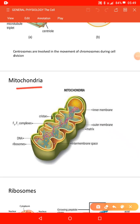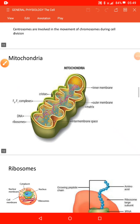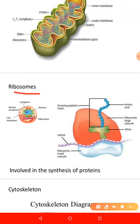The next organelle is the ribosomes — not lysosomes. Ribosomes are organelles without a limiting membrane. They are granular and small dot-like structures. There are two types of ribosomes: those attached to the rough endoplasmic reticulum, and free ribosomes that are distributed in the cytoplasm.